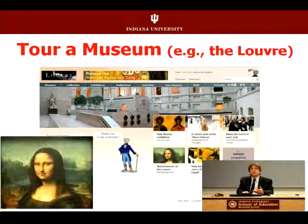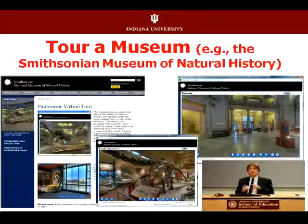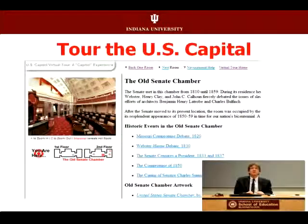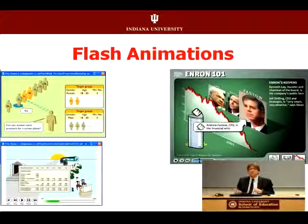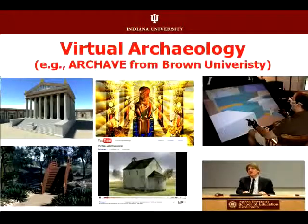When you have virtual tours in museums like the Louvre or the British Museum, where you can explore authentic artwork and pieces of art from around the world, or the Smithsonian Museum of Natural History on the web, and take a 3D walk through. Go to the U.S. Senate chambers in the U.S. Capitol and take a tour. Or if you're in engineering, go to drilling sites. In statistics, do randomization of groups or chi-square analysis in a flash animation. In business, do cash flow or reenact the Enron crisis. If you're an archaeologist, do virtual archaeology on the web.